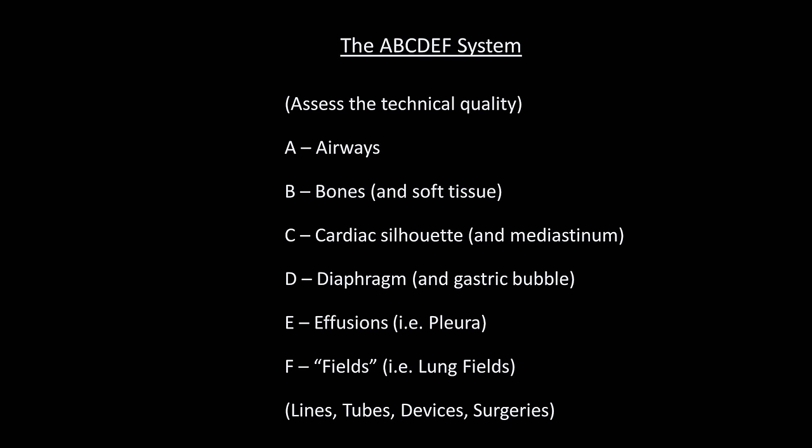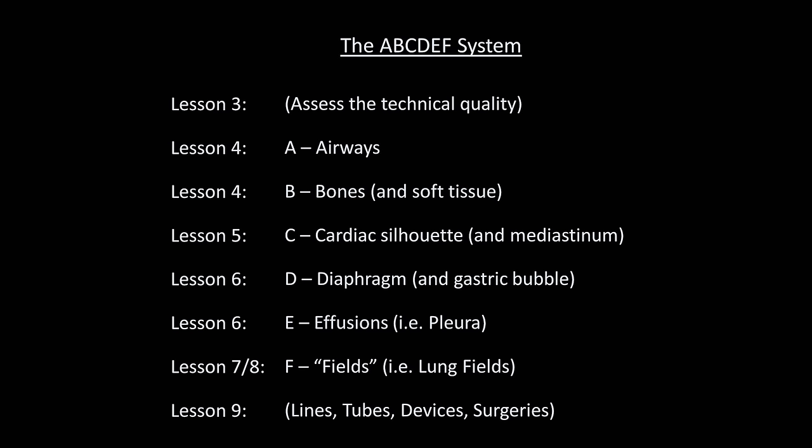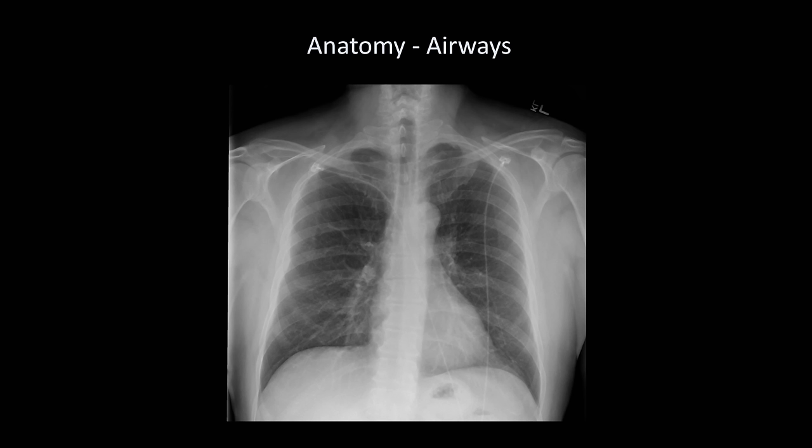You may have noticed that the list of items here lines up with the remaining videos in this series, which of course is not a coincidence. But before you can identify pathology of each of these anatomic structures, you first need to know where they are on the x-ray and what they normally look like. So let's go through the x-ray anatomy of A to F, one at a time.